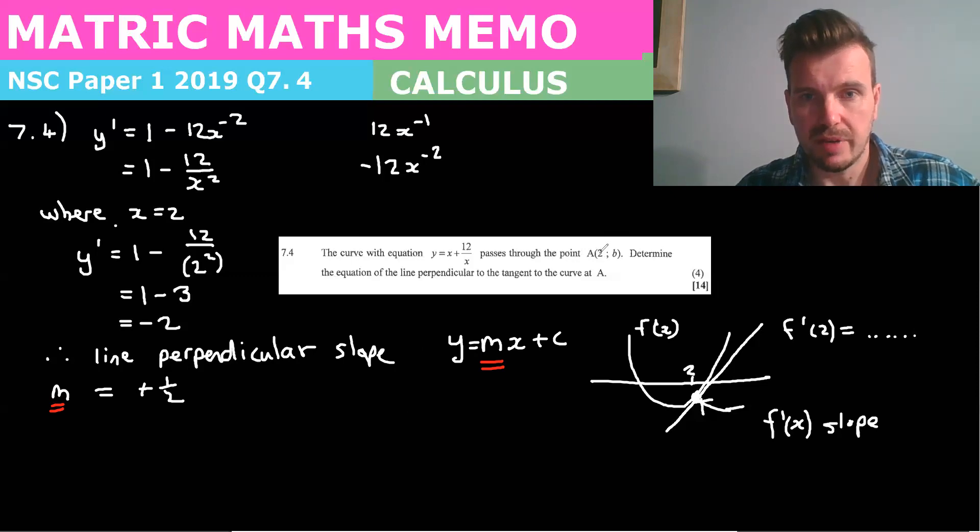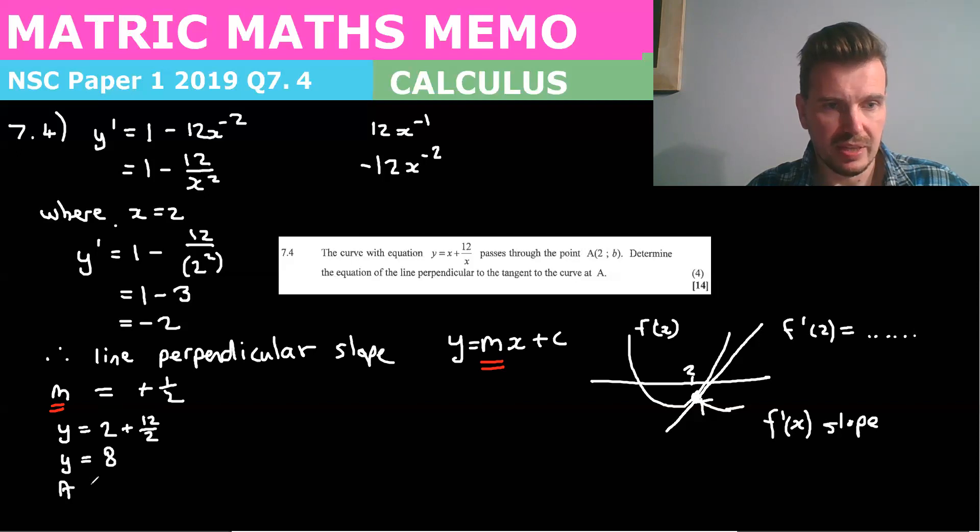We know that one value of x is two. So we could get the y value of this point by simply substituting two into the equation. So I would say y equals 2 + 12/2, which is equal to 2 + 6, which is 8. So I know that the point a is (2, 8).